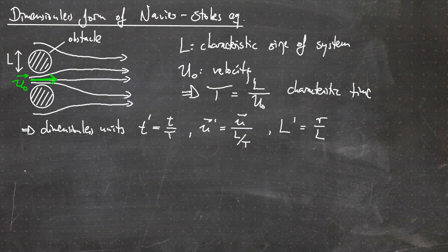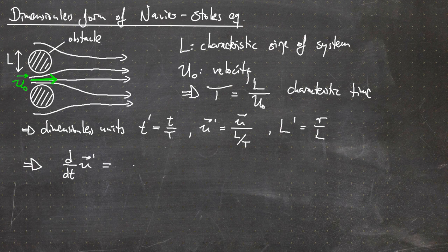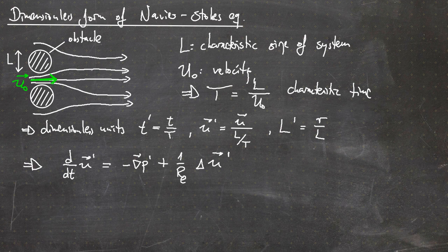Using these dimensionless units, we can get the dimensionless form of the Navier-Stokes equation, which reads: the derivative with respect to T prime of the dimensionless velocity, minus the gradient of the pressure, plus one over RE times the Laplacian of the dimensionless velocity. Note that for the gradient and the Laplacian we also have to introduce the prime notation for the normalized coordinate system.